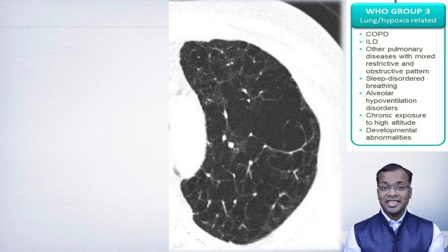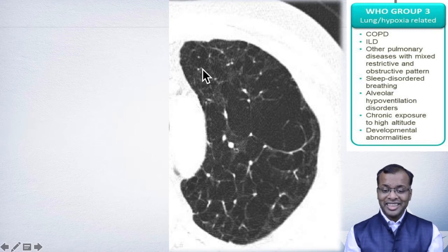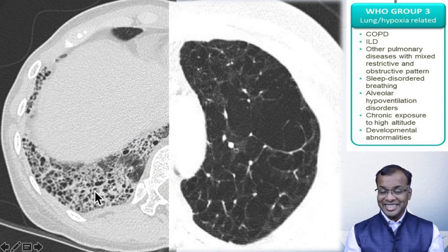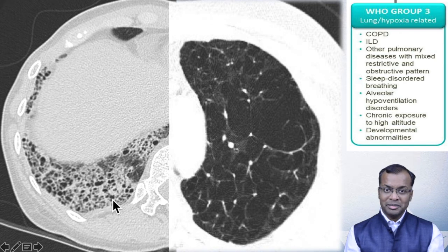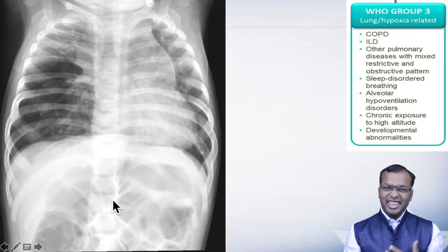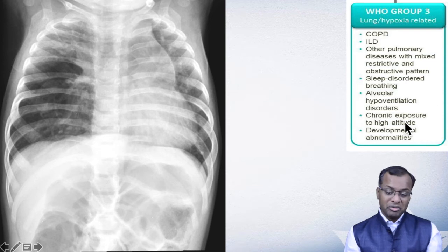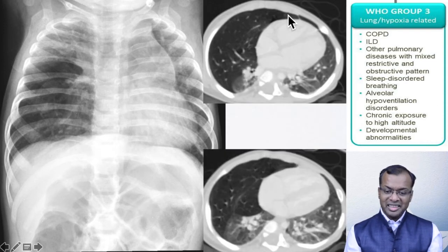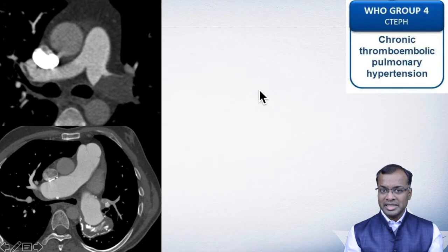Group 3 conditions involve lung abnormalities. We see patients with extensive emphysema or extensive interstitial lung disease, which account for pulmonary hypertension. In children, when looking at Group 3, developmental lung abnormalities such as areas of hyperinflated lung with collapse of other segments can be easily identified on CT.